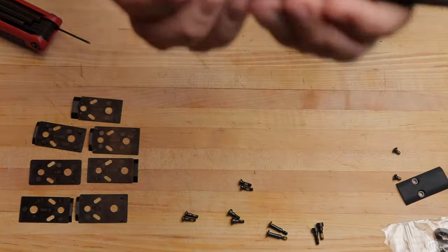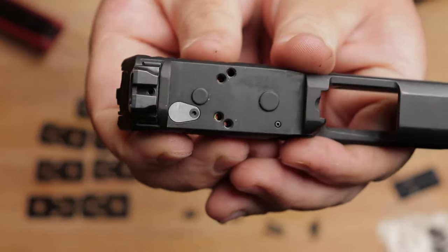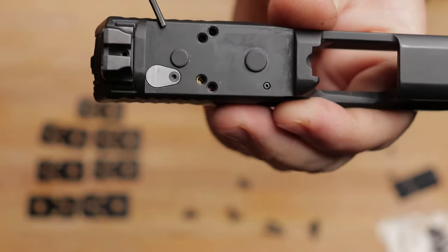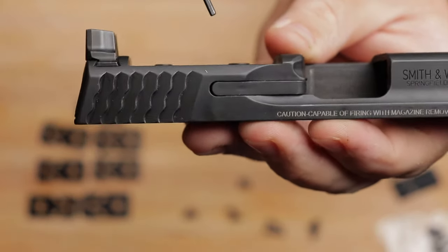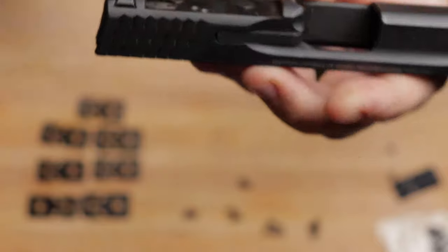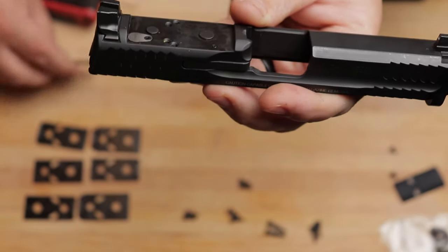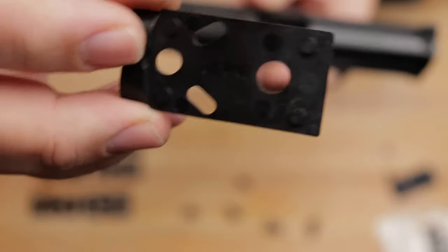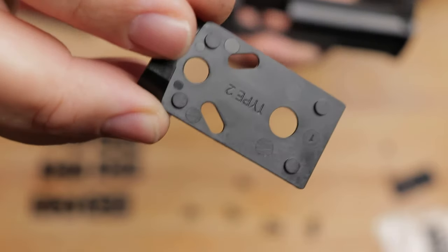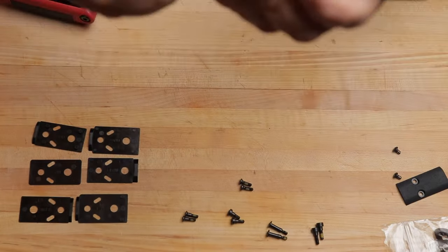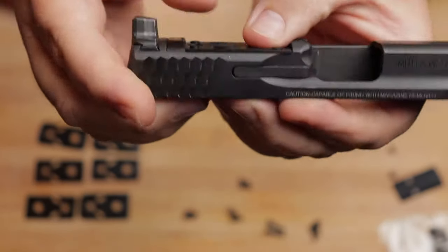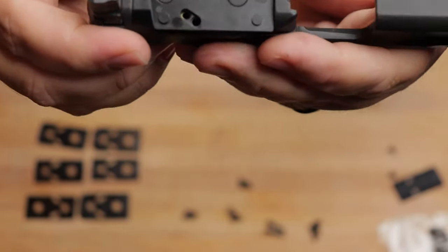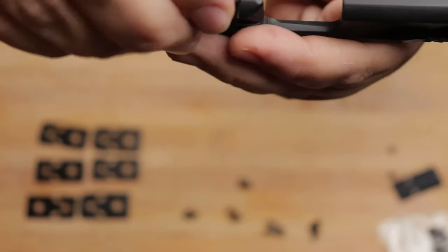Now, if you look on here, see how we have these little circles here, they're actually studs that kinda stick out a little bit. That is because if you look at the plates here, they also have a small hole and a big hole, and that's so that it will fit on the slide, nice and flush.